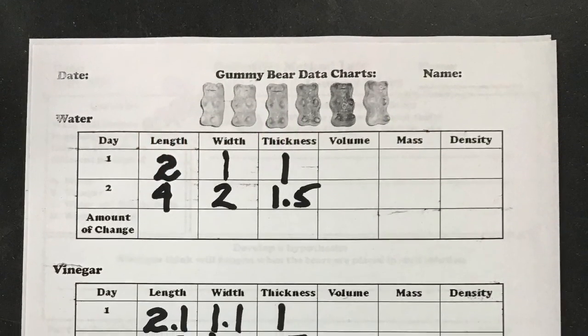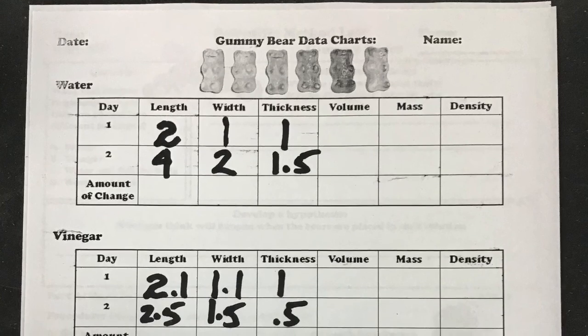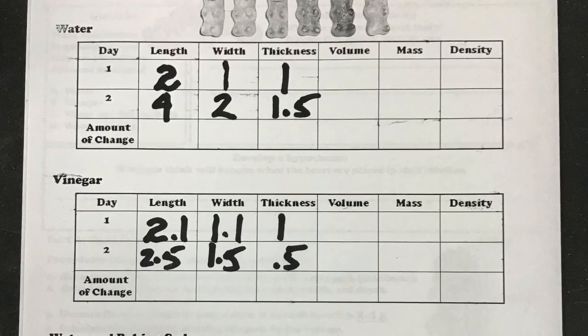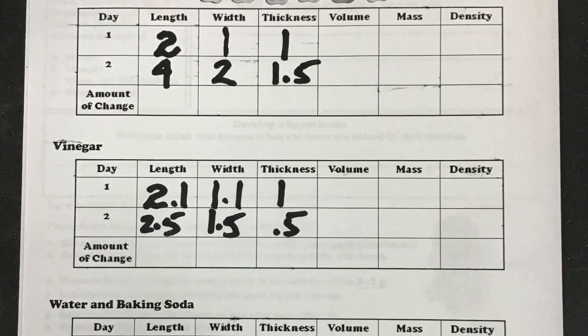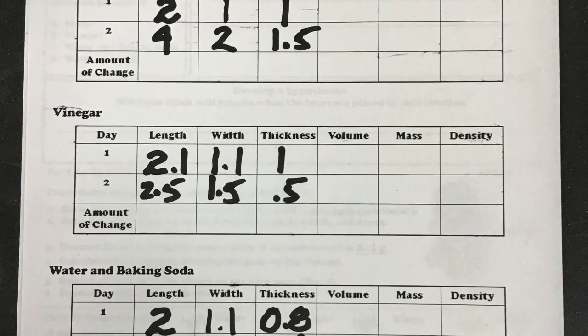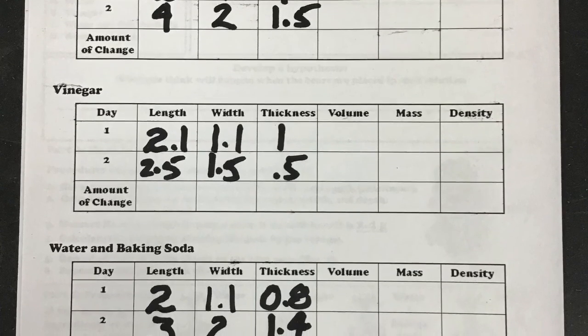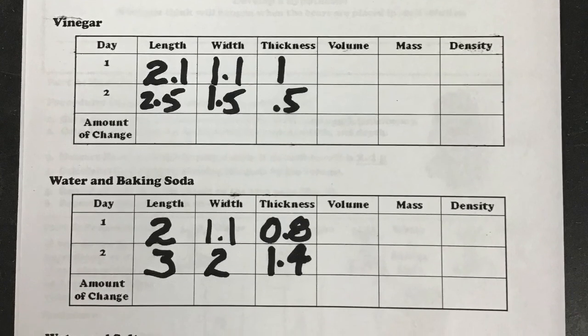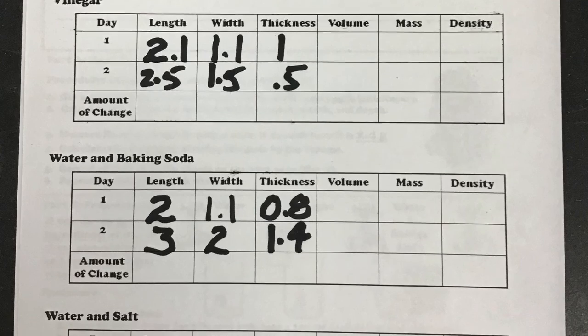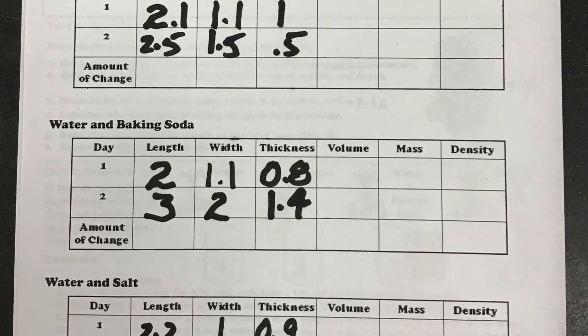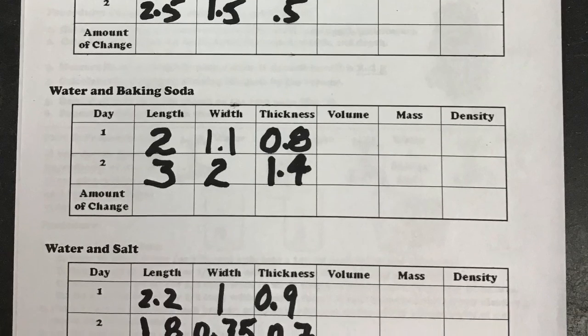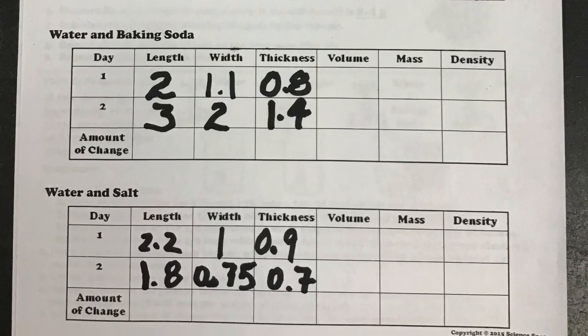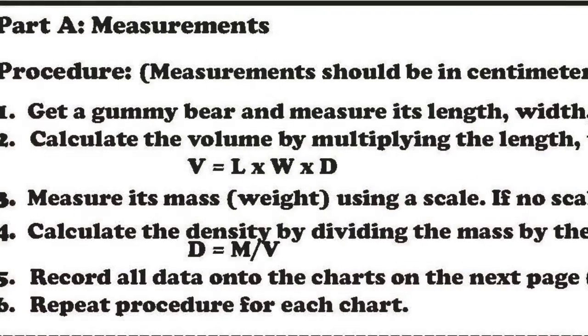Okay, now we have day two data. So on day two, it increased to four for the length, everything's in centimeters, two for the width, and thickness is 1.5 centimeters. For the vinegar, 2.5 centimeters for the length, width is 1.5, thickness is 0.5 for the thickness for vinegar. Water and baking soda, so on day two, the length was three, the width was two, and the thickness was 1.4. And the water and salt, 1.8, 0.75, and 0.7 for the thickness.